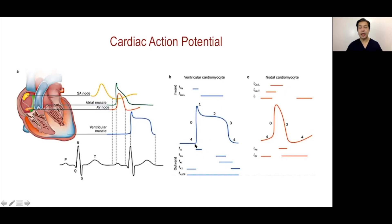When the cardiac myocyte is stimulated with application of positive energy, the voltage-gated sodium channels open, facilitating rapid sodium entry through rapid sodium channels. The deflections in the cardiac action potential are mainly driven by the transfer of electrolytes across the channels.